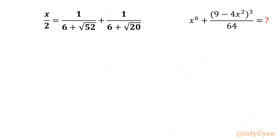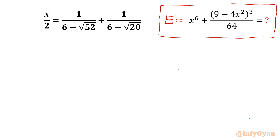The given equation is x over 2 equal to 1 over (6 plus √52) plus 1 over (6 plus √20). We are asked to find x⁶ plus (9 minus 4x²)³ over 64. Let us call this expression equal to E. So we are going to evaluate this expression.